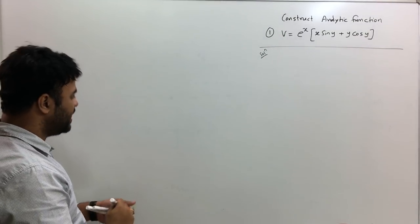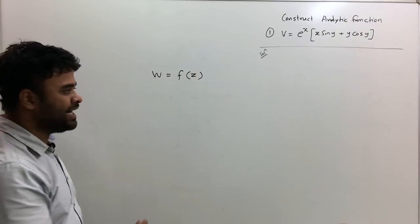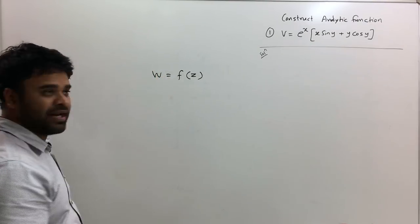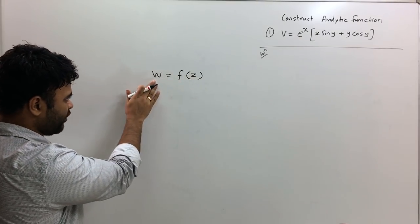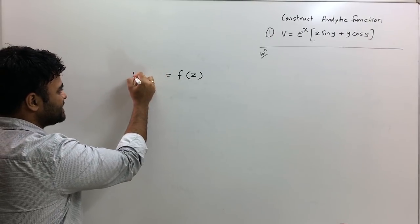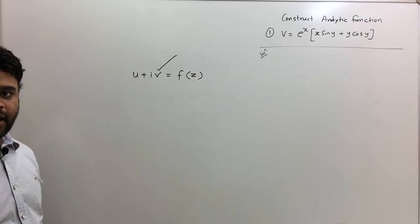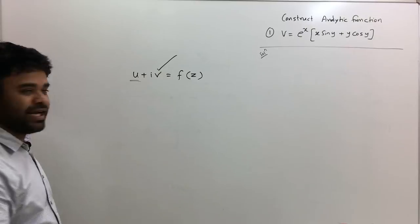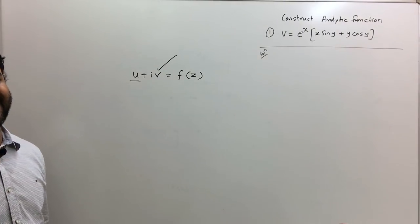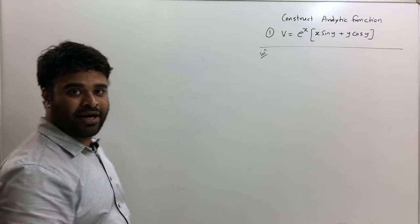We write W as a function of Z. Note that Z and W are both complex variables. When you have a function of a complex variable, the output is also a complex number — W is also complex, and it equals u plus iV. Here, V is given to us, and the function we construct must be analytic.